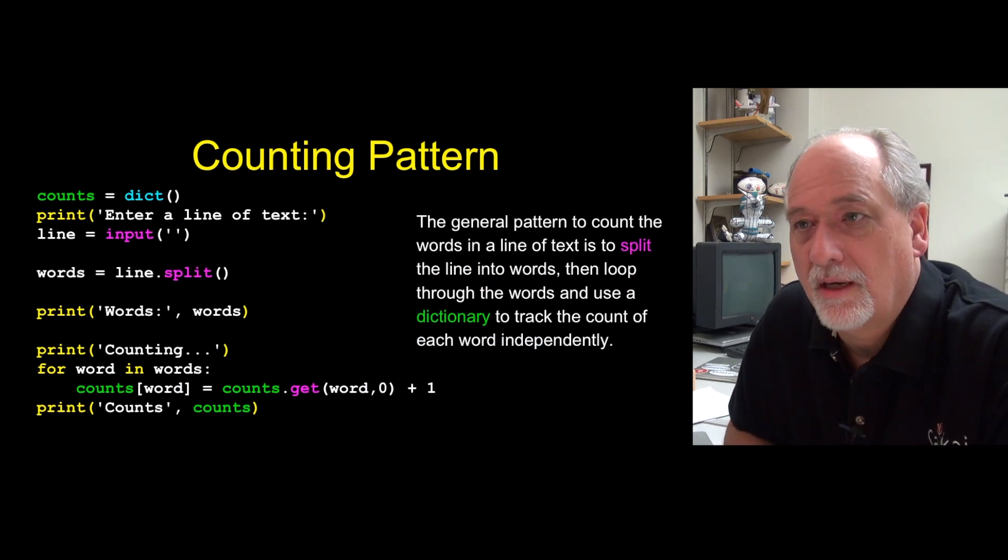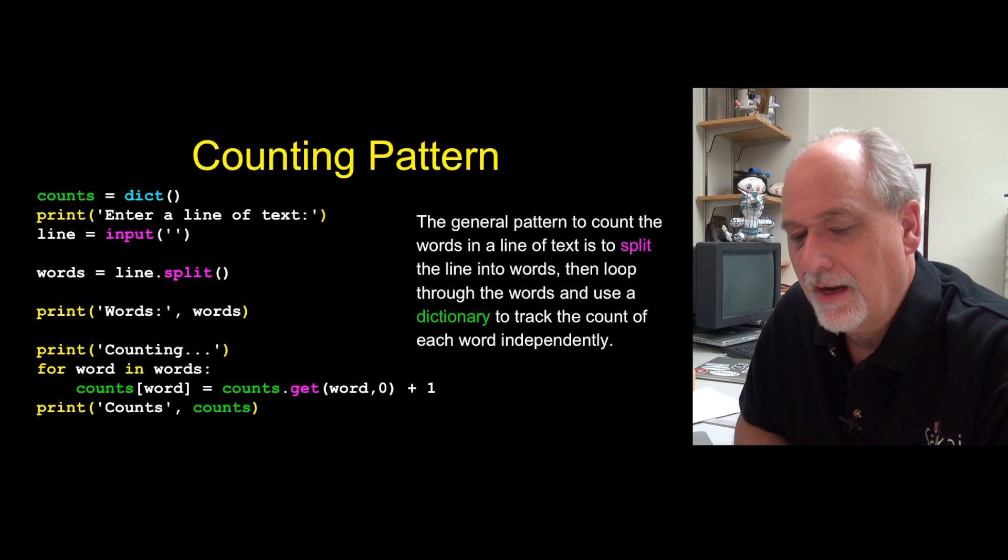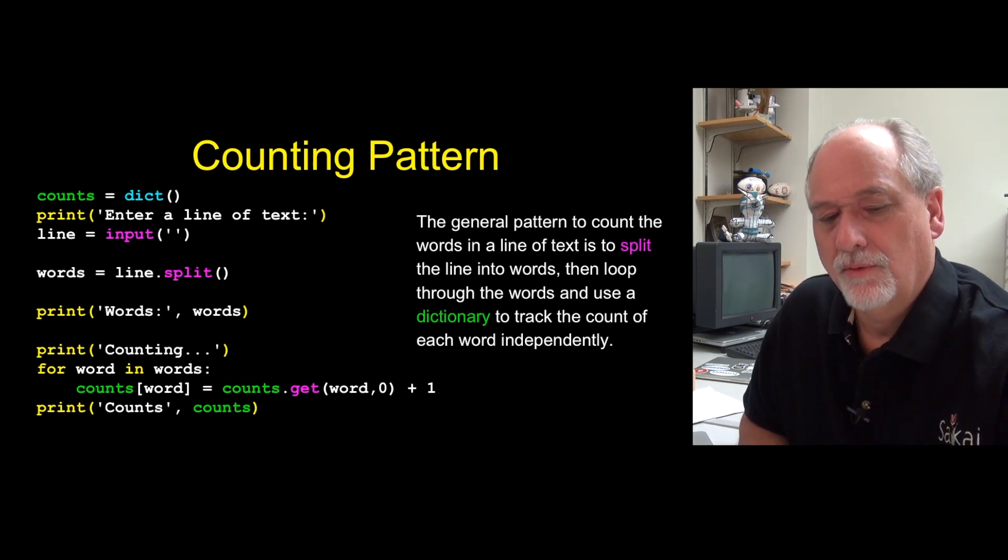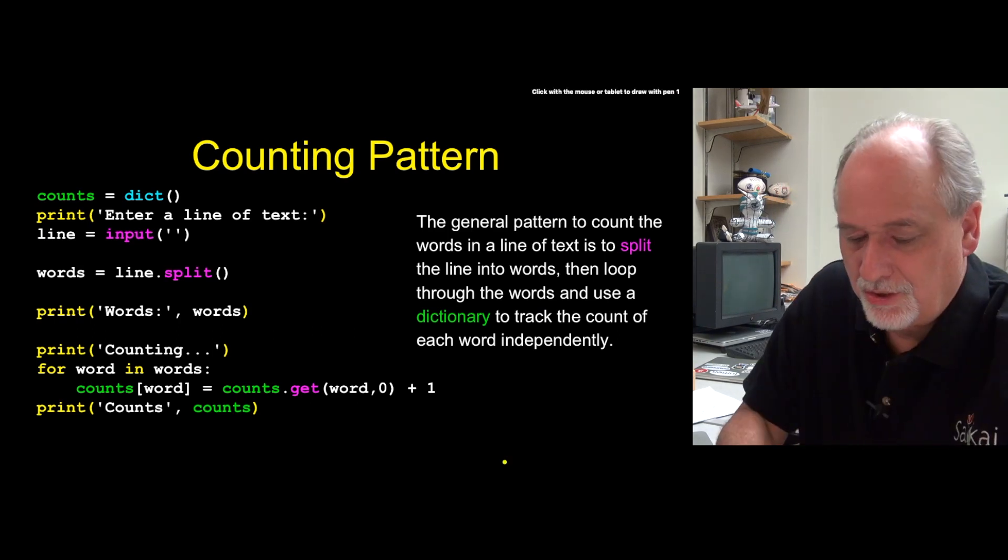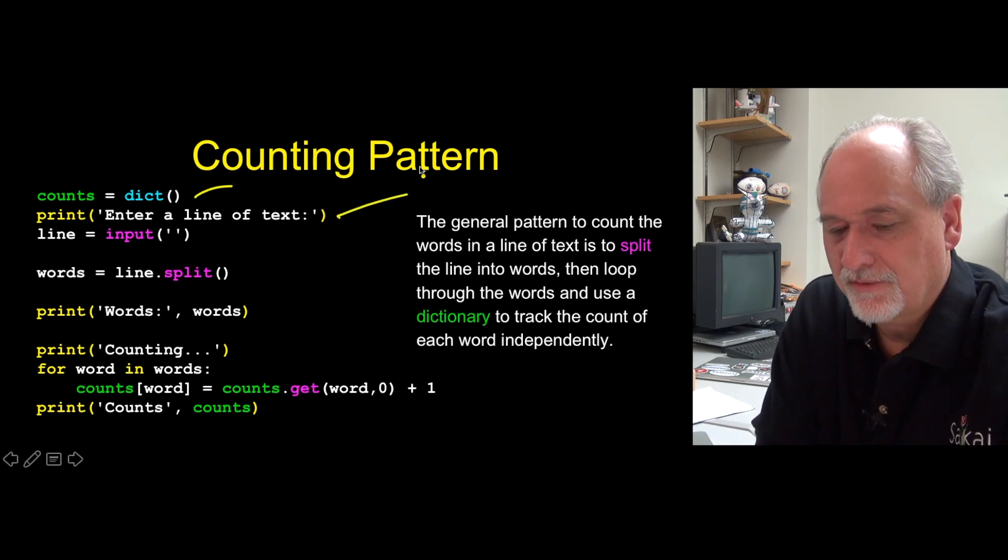And so here is a counting pattern where we're going to take a line and then later we'll read this in a file. And so this is just an adaptation improvement of the previous thing. So we're going to start with an empty dictionary. We're going to ask for a line of text and read it in.